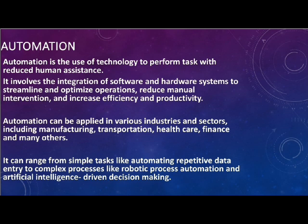Automation in agriculture involves the integration of technology to perform tasks traditionally carried out by humans. These include robotic systems, drones, and smart machinery. Automation improves precision in tasks like irrigation and fertilization.